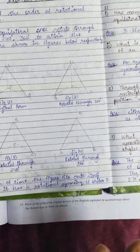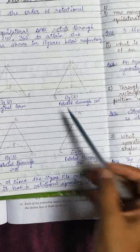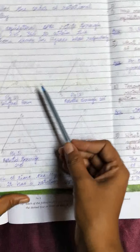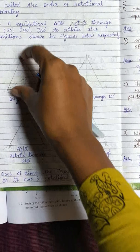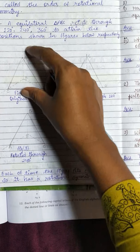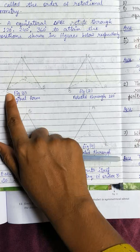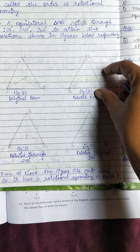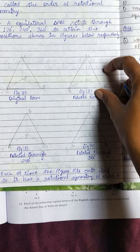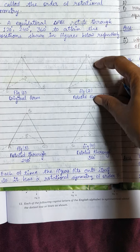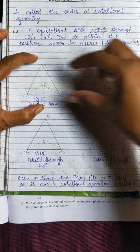In a complete rotation of 360 degrees, the equilateral triangle fits onto its original figure three times — at 120°, 240°, and 360°. Even though the vertex labels (A, B, C) change position, the figure looks the same because all sides of an equilateral triangle are equal. So it fits onto itself three times.